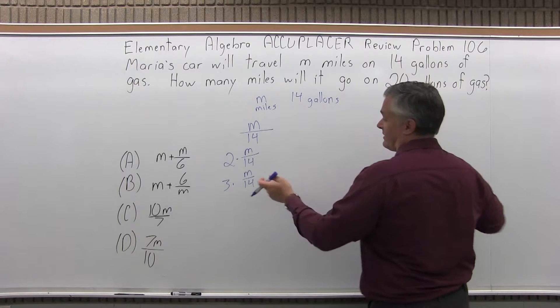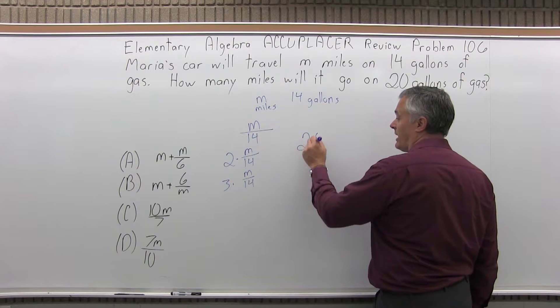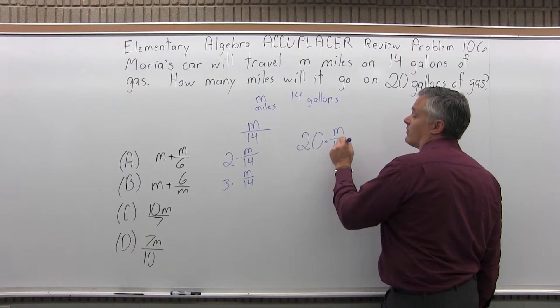So on 20 gallons of gas, the same process, you'll do 20 times M over 14.